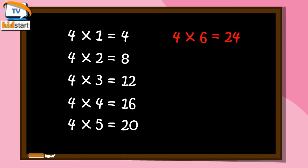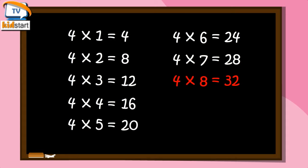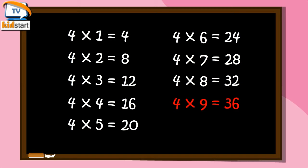Four Seven's Are Twenty-Eight. Four Eight's Are Thirty-Two. Four Nine's Are Thirty-Six. Four Ten's Are Forty.